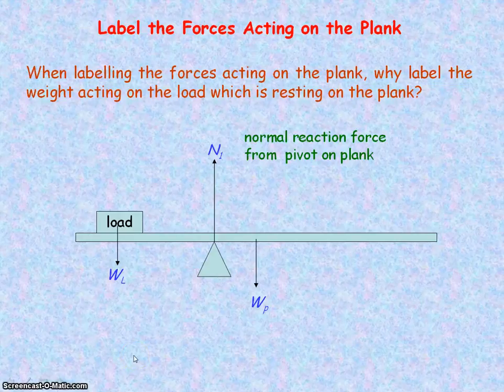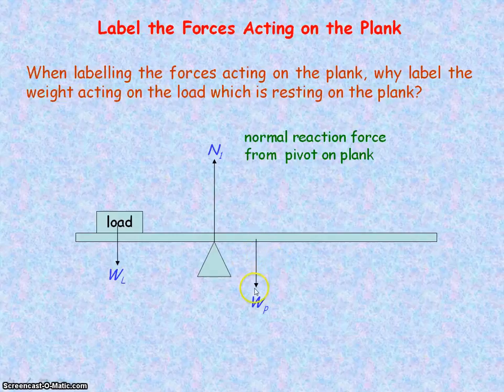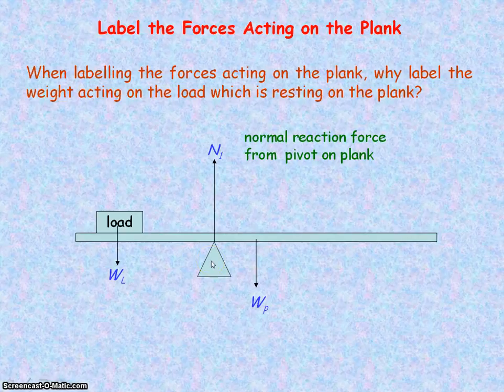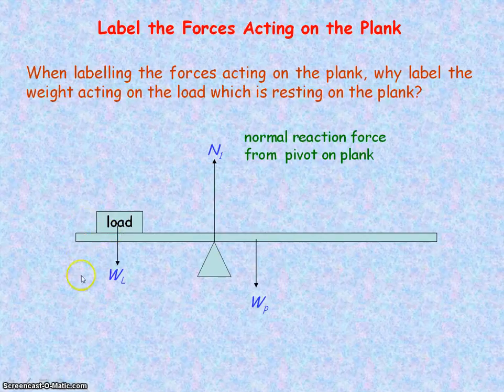This diagram is showing you the forces that are acting on this plank, which is at rest. So we've got the weight of the plank, which is acting at its centre of gravity. We've got the normal reaction force from the pivot on the plank, which I've labelled N1. And then the final force we've labelled is the weight of the load.